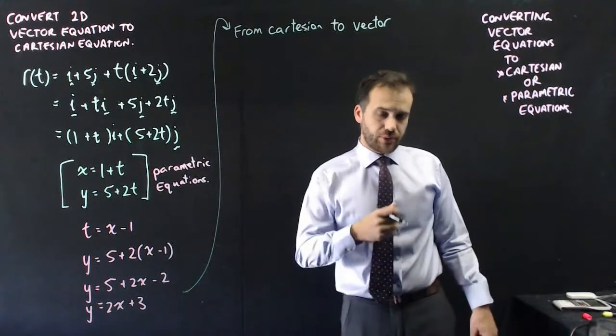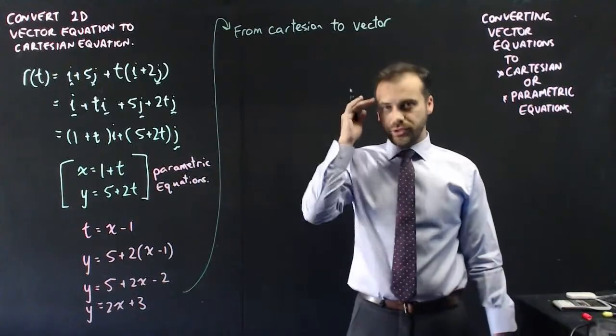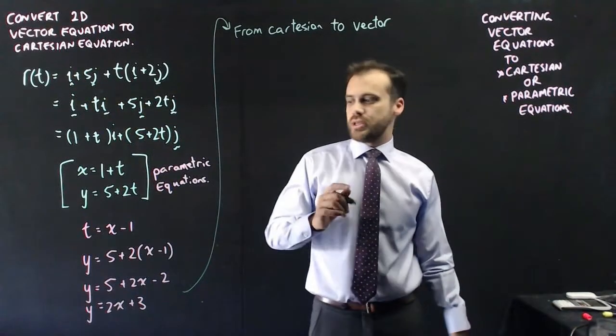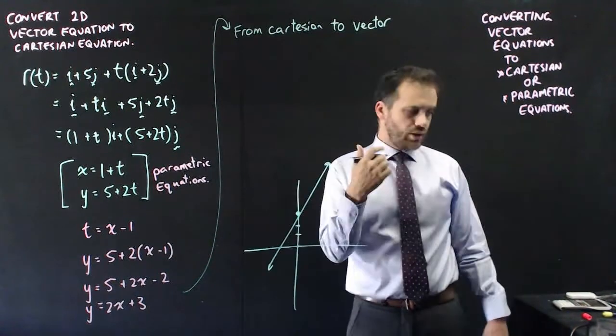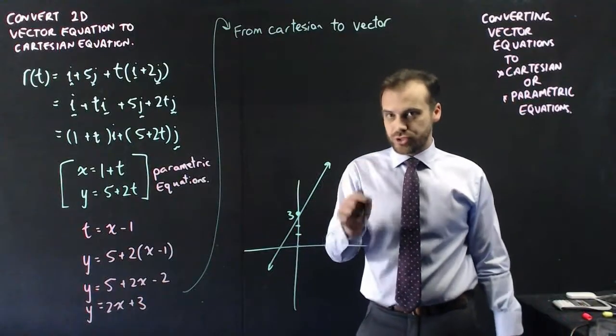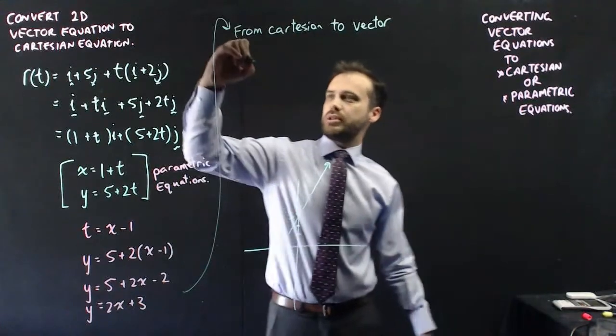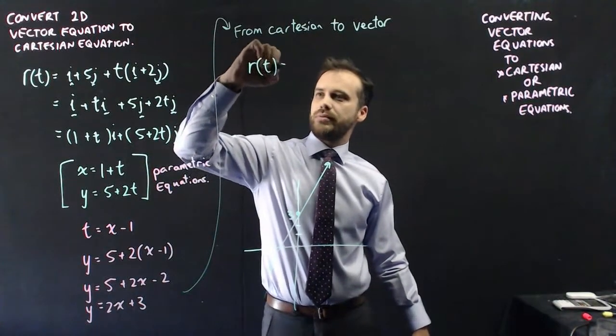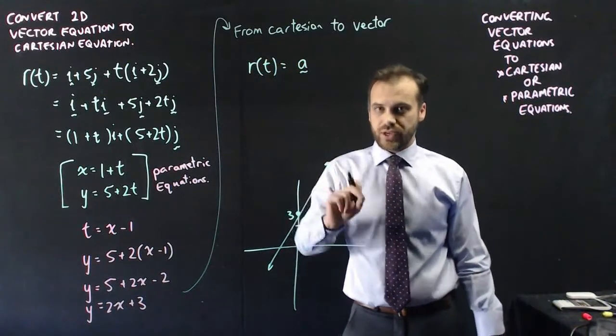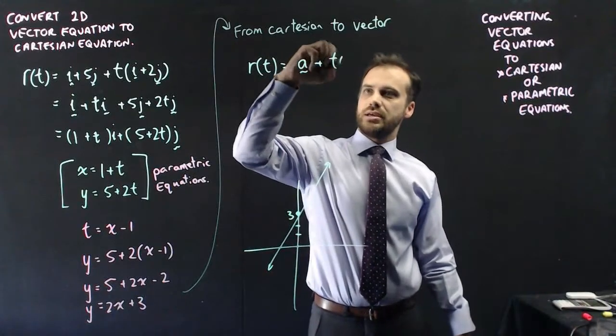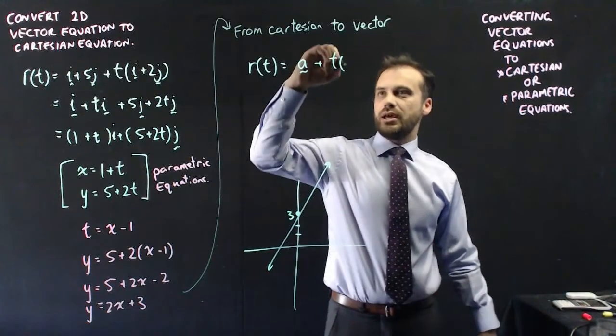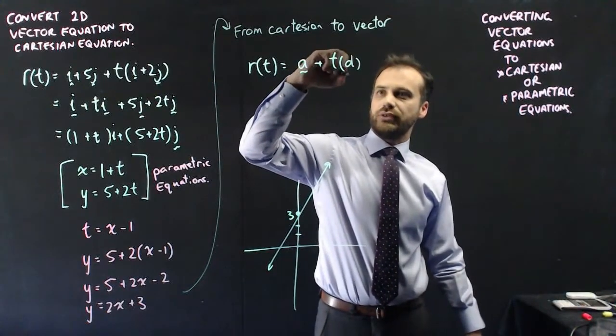Now if you want to reverse that process it's fairly straightforward, but it relies on you understanding what a vector equation is. So y equals 2x plus 3 looks like this, with a y-intercept of 3 and a gradient of 2. Now you should remember that our vector equation is all about a starting position, a vector to a starting position, plus t times a vector parallel to our function, which we'll call vector d.